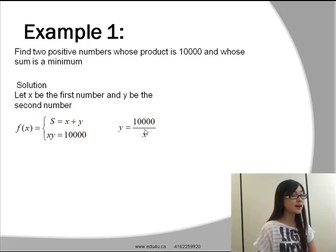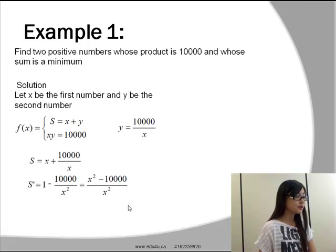If we rearrange the second equation, we will get y is equal to 10,000 over x. And this way we will write s in terms of x. Next, what we can do is substitute this equation back into our s equation, and we'll get s is equal to x plus 10,000 over x.